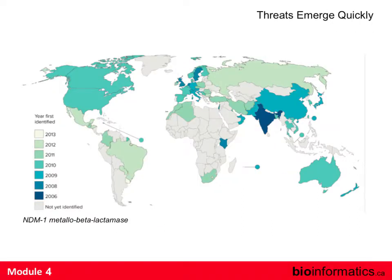Threats emerge quickly. NDM-1 is a beta-lactamase gene, plasmid-borne, that knocks out carbapenems — one of our two classes of last-resort drugs. This came down to one Swedish individual in India in 2006 who got a gut infection where the bacteria had picked up this gene. That patient was flown to the UK for treatment and it got into UK hospitals. One person — and now every nation with color on a map is where NDM-1 is detected. Canada has an NDM-1 problem too. One person, rapid spread of a gene that takes out one of the two major drug classes of last resort.